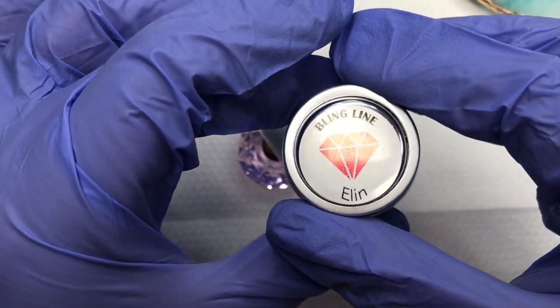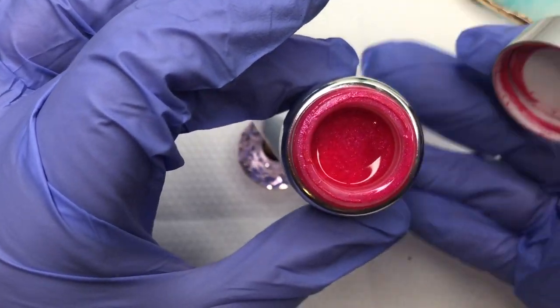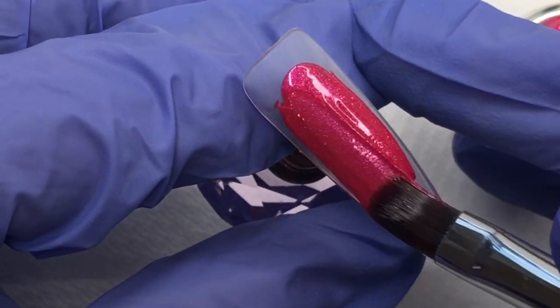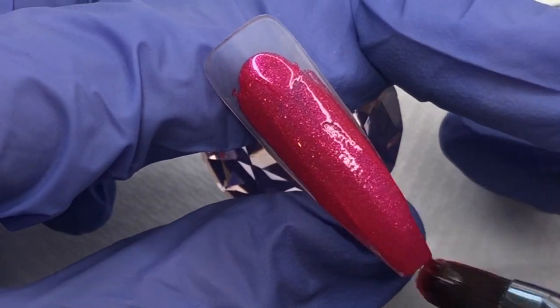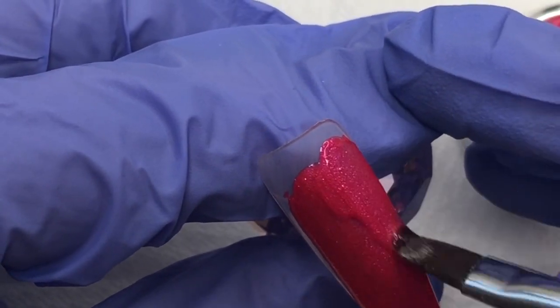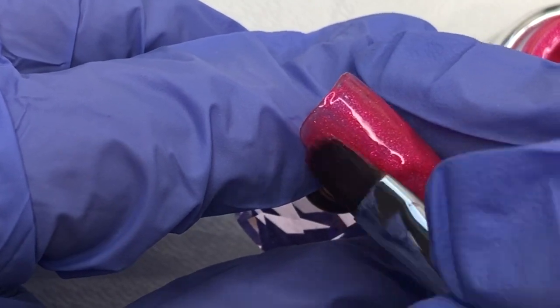Okay so I'm going in first of all with a layer of this color, this is Bling Lines Elin and it is the most beautiful bright summery pink and it has a very slight sparkle through it. So I'm going to be putting my first layer down, curing in the lamp and then getting in with a second layer.